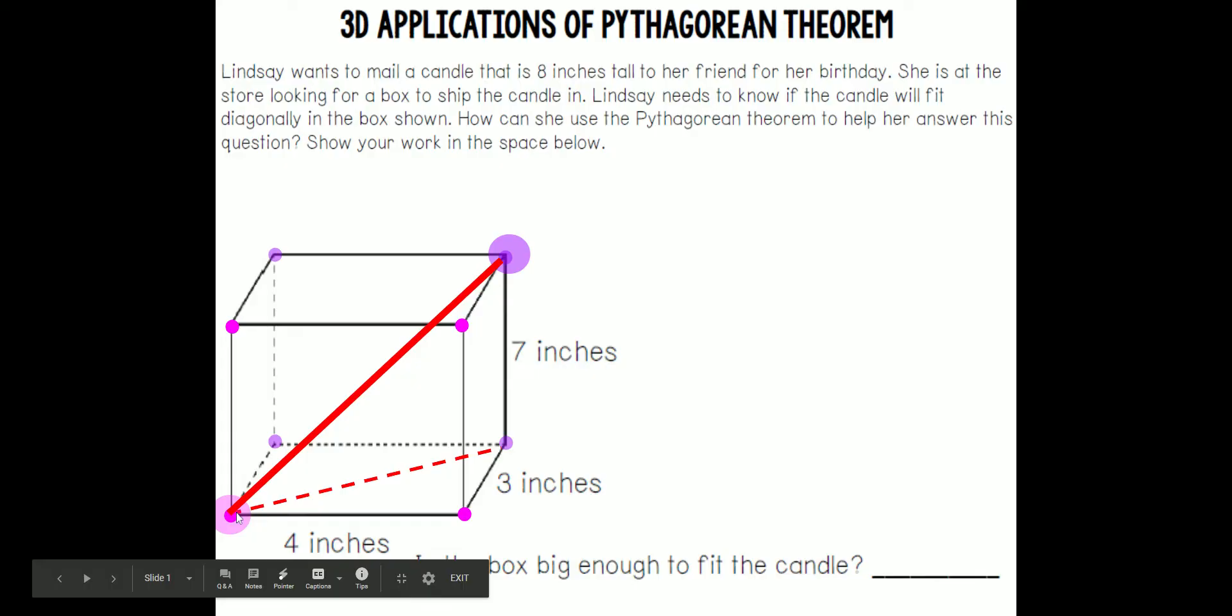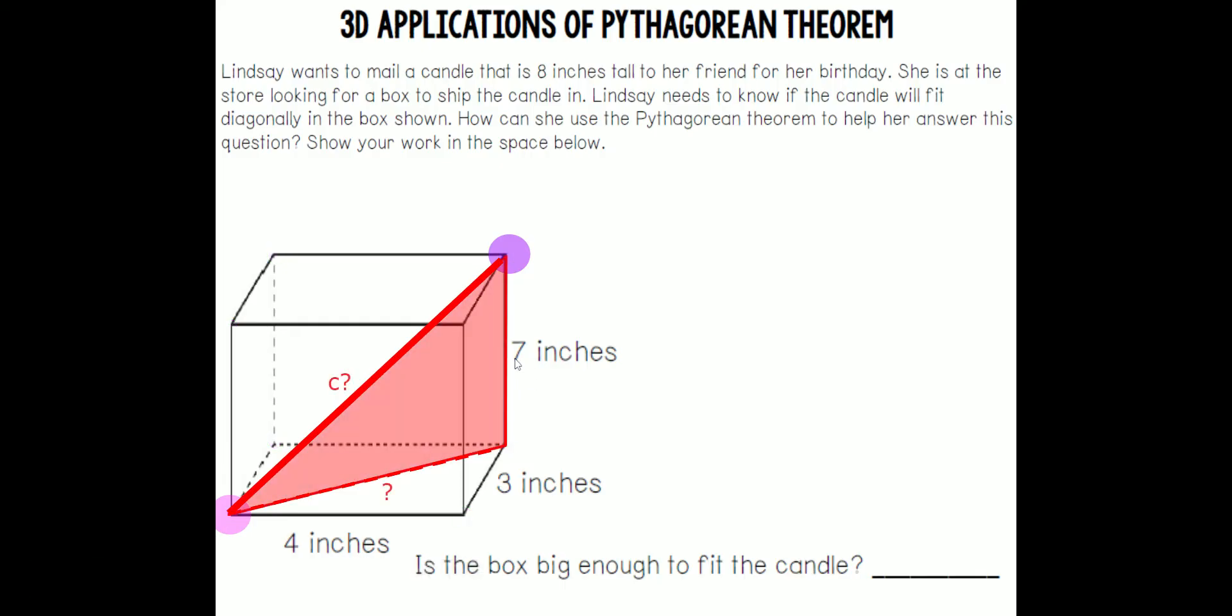What do we know? We can see that this forms a right triangle, and what information do we know? We know that this is seven inches tall, but we don't know what this is, and we don't know what this is. I labeled it C because it is the hypotenuse of this right triangle. If we tried to set up this equation, we'd have A squared plus seven squared equals C squared. You can't solve this if you've got two missing variables or two missing values.